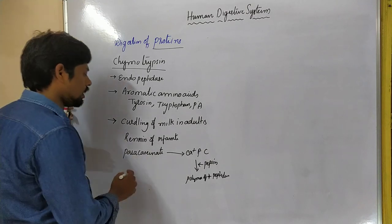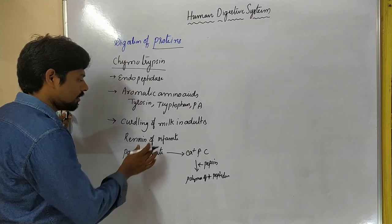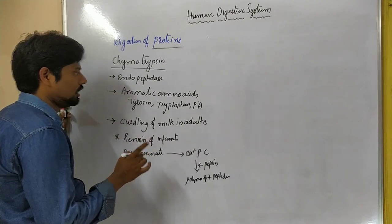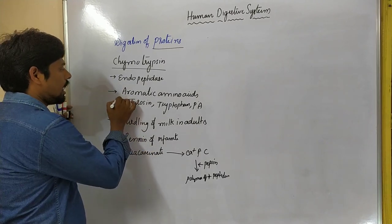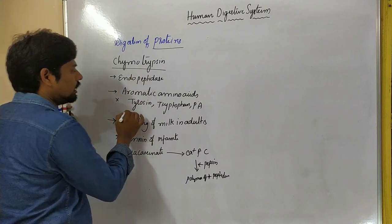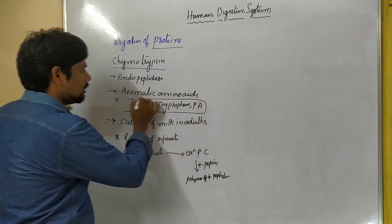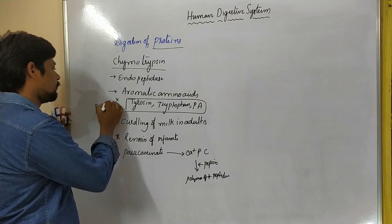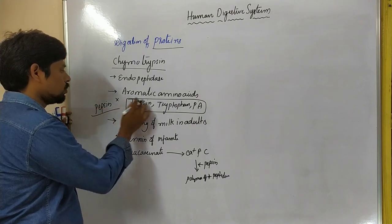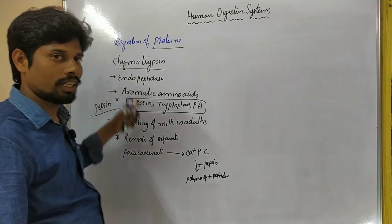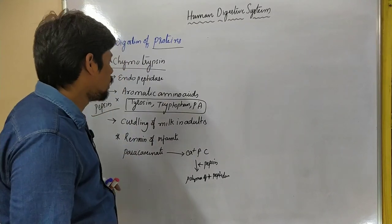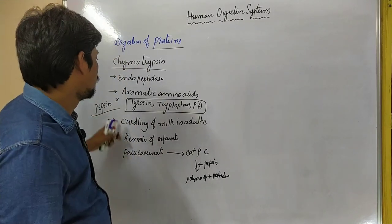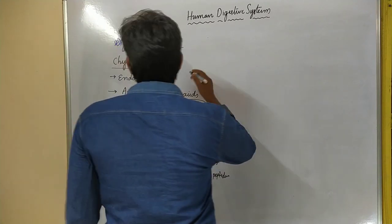We have to remember the rennin function in adults — that is very important. The action of chymotrypsin on these amino acids, and the specificity of pepsin, are two very essential and important points for competitive examinations.